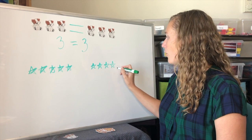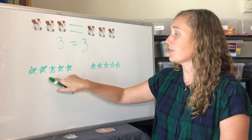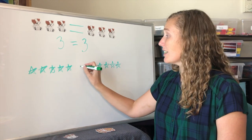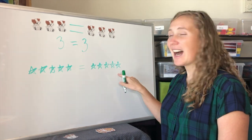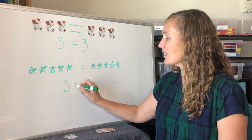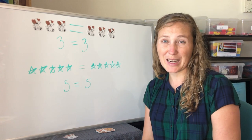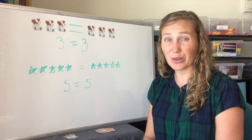three, four, five stars over here. Five stars equals five stars. Five equals five. Are you ready to do an equal rhyme?